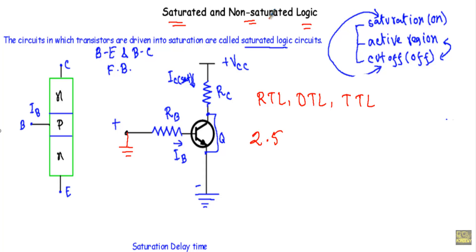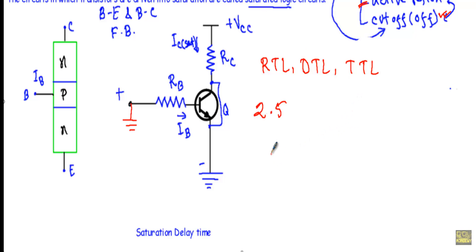Now let me talk about non-saturated logic. The circuits that avoid saturation during logical operation are known as non-saturated logic. For non-saturated logic, a transistor is biased in the active region so it will never saturate, and it will operate either in the active region or in the cutoff region. ECL and Schottky TTL logic circuits use non-saturated logic to perform their logical operation.